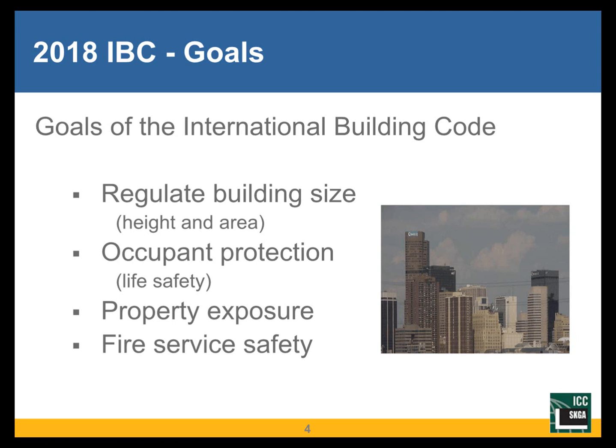A third item is property exposure. As we build these buildings, they pose a fire risk not only to the building itself and to the occupants, but to adjacent properties. And as I mentioned when talking about regulating the size of the building — as the building gets bigger, it can in fact pose a bigger risk to adjacent properties. So the building code has provisions from a fire safety and fire resistance point of view that want to reduce or minimize the risk of fire spread from the building in question to any adjacent properties.